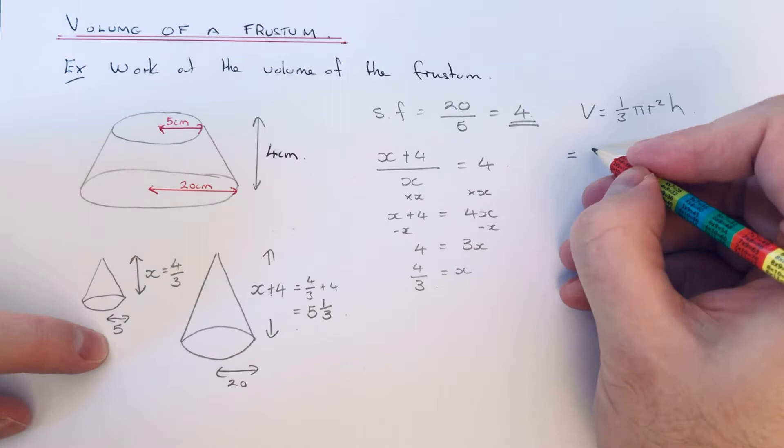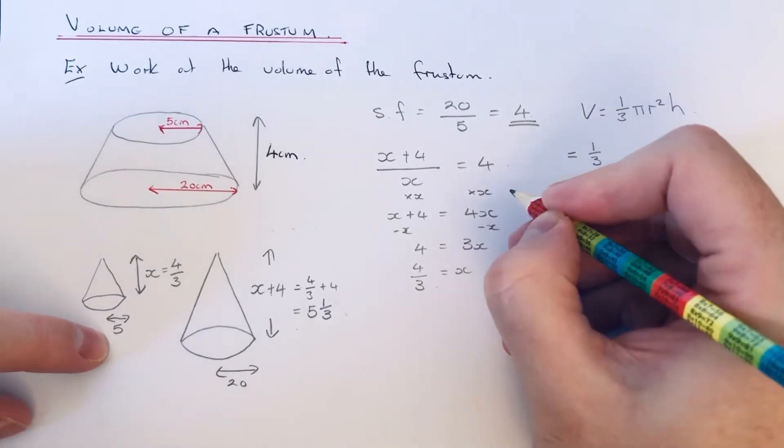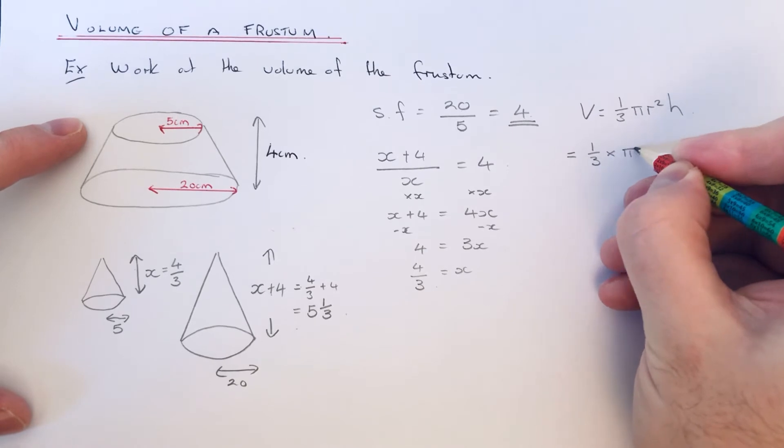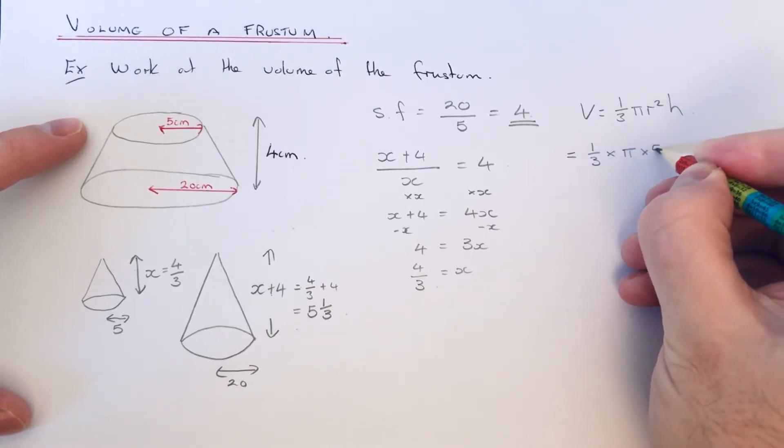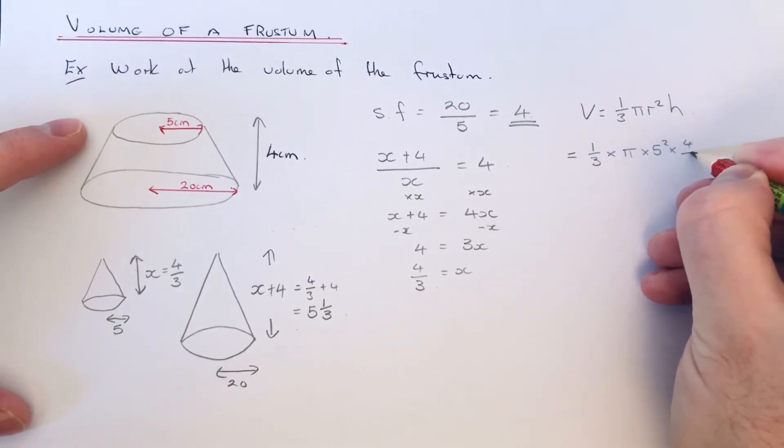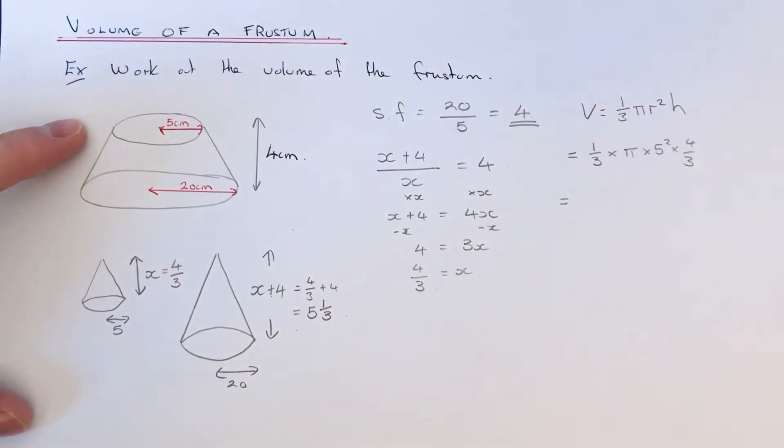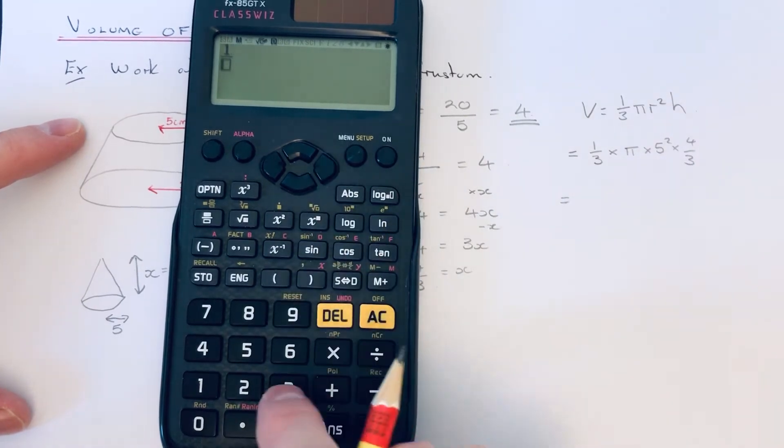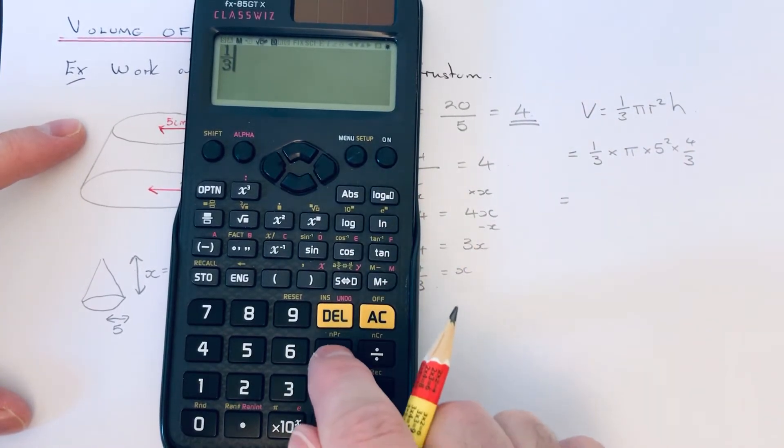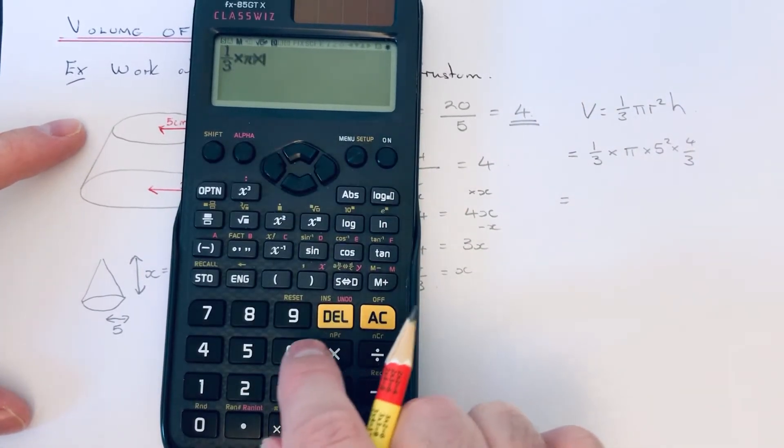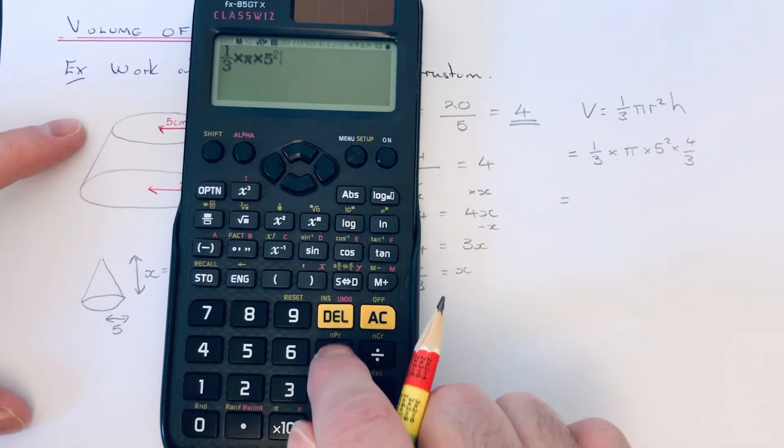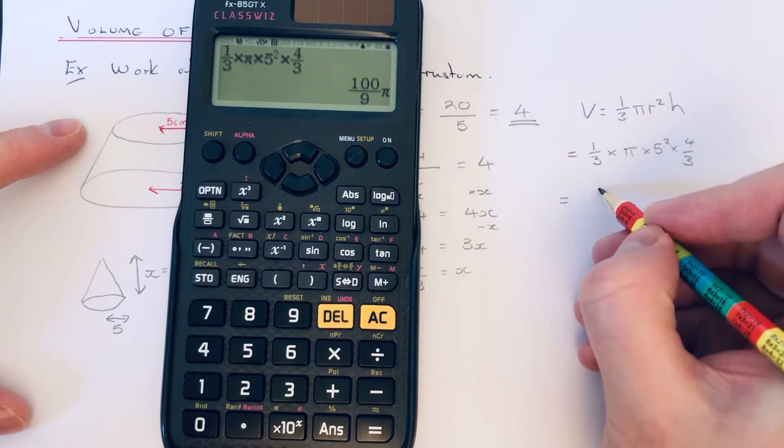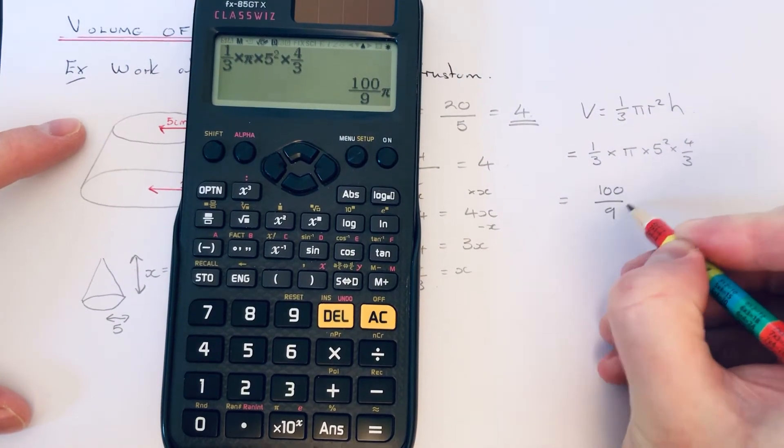So the radius of our small cone is 5, and the height is 4 thirds. So we have a third times pi times 5 squared times the height. Just type that in on the calculator. So that gives 100 over 9 pi.